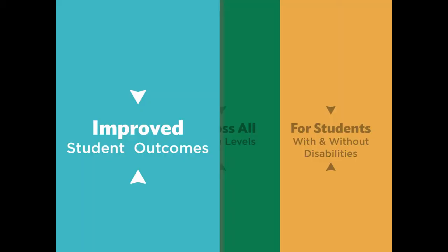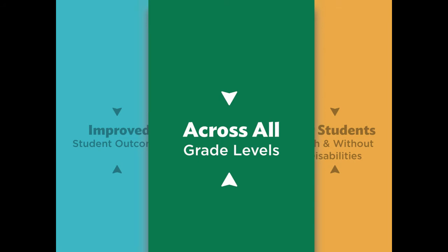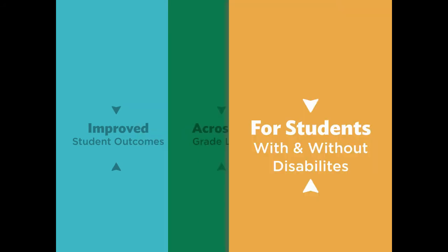Let's look at what research says about the value of inclusive academic instruction. We know that a tiered system of support for inclusive academic instruction across all grade levels is most often supported with research related to supplemental systems and literacy. A strong body of research supports improved outcomes for students with and without disabilities when practices around UDL and differentiation principles are applied. A multi-tiered system of support for reading is associated with significantly improved outcomes across all grade levels. Students with and without disabilities benefit from universal design for learning and differentiation practices.